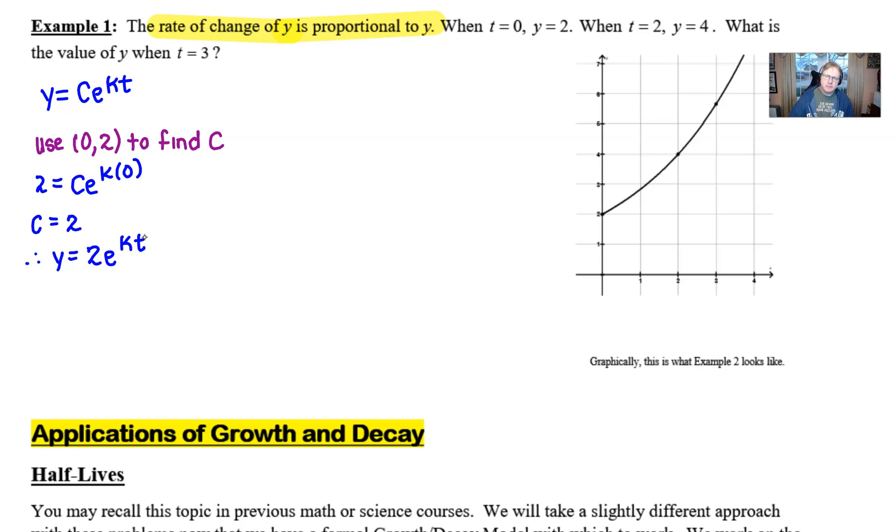The problem with that is we still can't do a whole lot with it until we know what the value of k is. And if you look long term, our actual question is what is the value of y when t = 3? So we're going to have to figure out what this k is before we have any chance of plugging in 3 for t. Well, lo and behold, that is exactly what the (2,4) is going to be used for. So if we use this other condition, that's going to enable us to find the value of k.